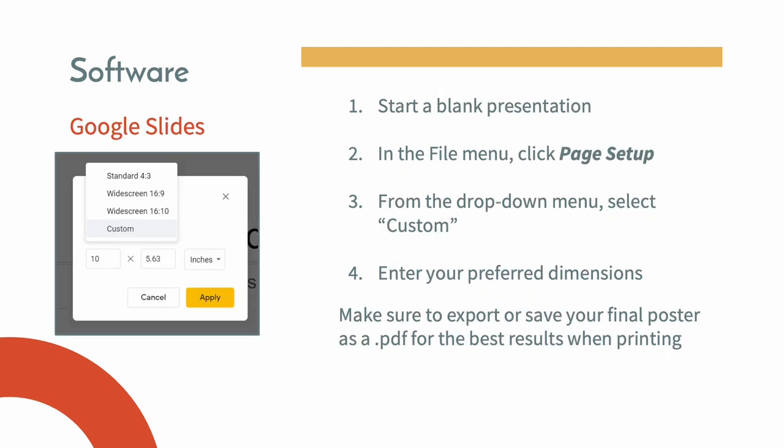When starting a blank presentation in Google Slides, in the file menu select Page Setup, and from the dropdown select Custom. Then enter your preferred dimensions. As with the other programs, export or save your final poster as a PDF.